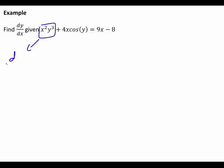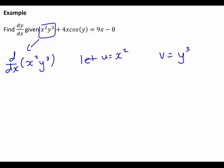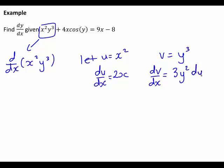First, finding the derivative with respect to x of x squared times y cubed. We let u equal x squared and v equal y cubed. The product rule requires du/dx, which is 2x, and dv/dx. Here we are differentiating a function of y with respect to x, so we first differentiate with respect to y, giving 3y squared, and multiply by dy/dx.